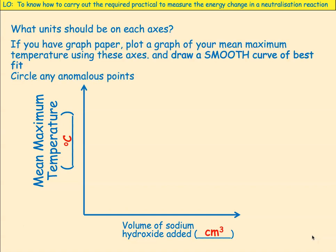If you have graph paper at home, plot a graph of your mean maximum temperature. Draw a smooth curve of best fit and circle any anomalous results. Pause the video now and try to do that.